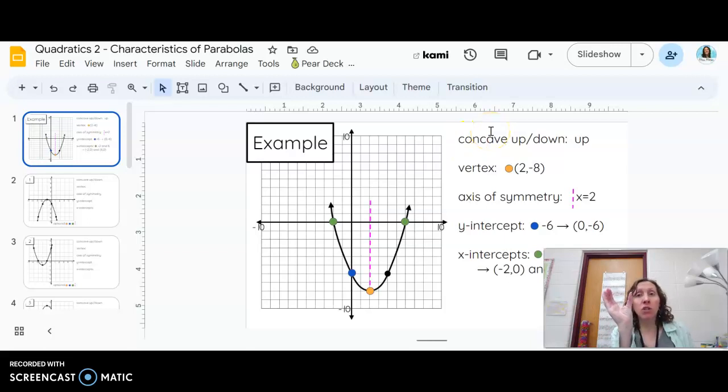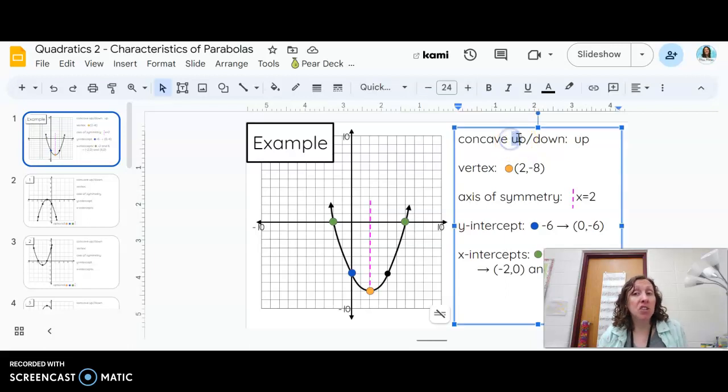Concave up means it's going to open like a U. Concave down means it's going to be flipped and it's gonna be opening the other way. So kind of remember that up, it's gonna be shaped like a U, down, upside down U.